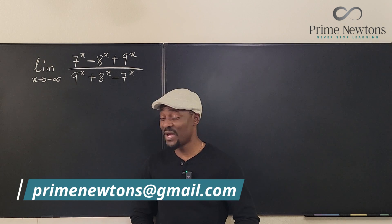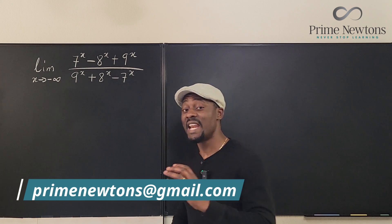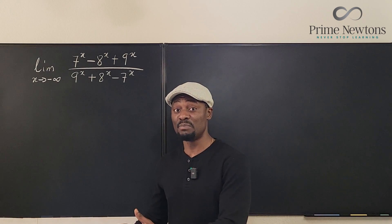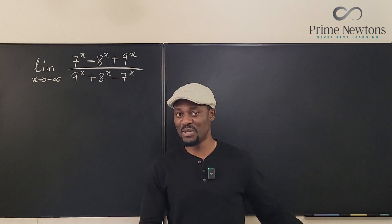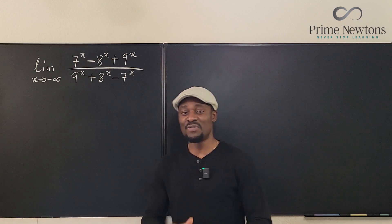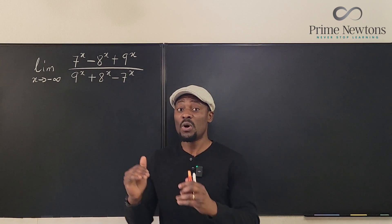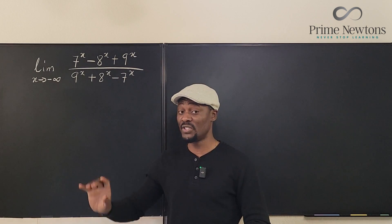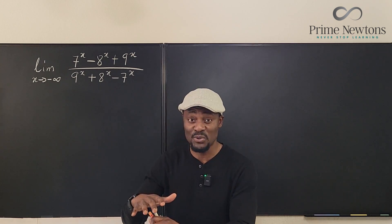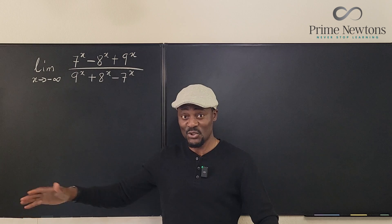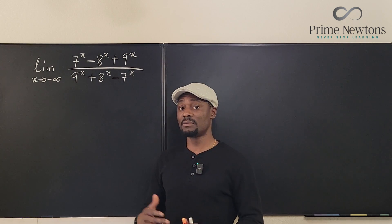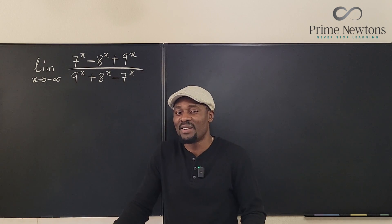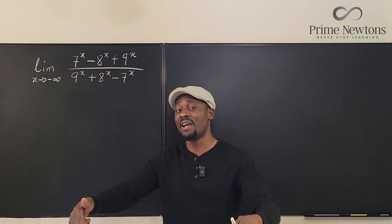Welcome to another video. We have a limit problem with x approaching negative infinity. This problem is very easy for millions of people and impossible for millions of people. The difference: if you adore L'Hôpital's rule, this is going to be impossible for you. If all you do is L'Hôpital's rule when you see indeterminate form zero over zero, you're going to be stuck forever. However, if you love algebra, this is going to be beautiful and sweet.